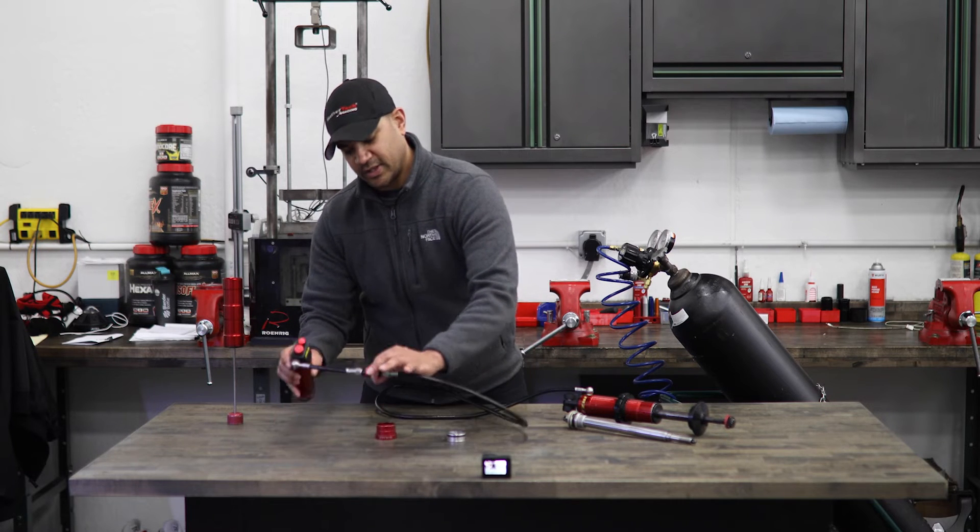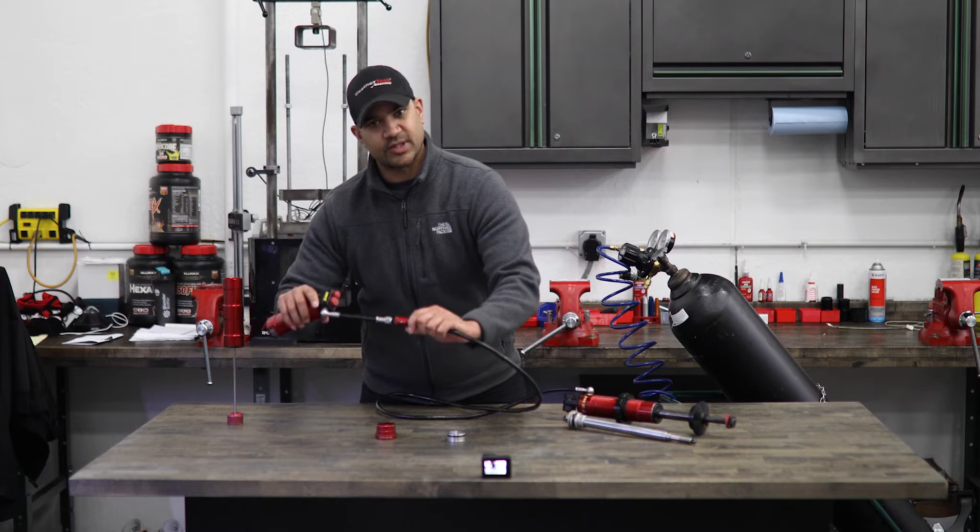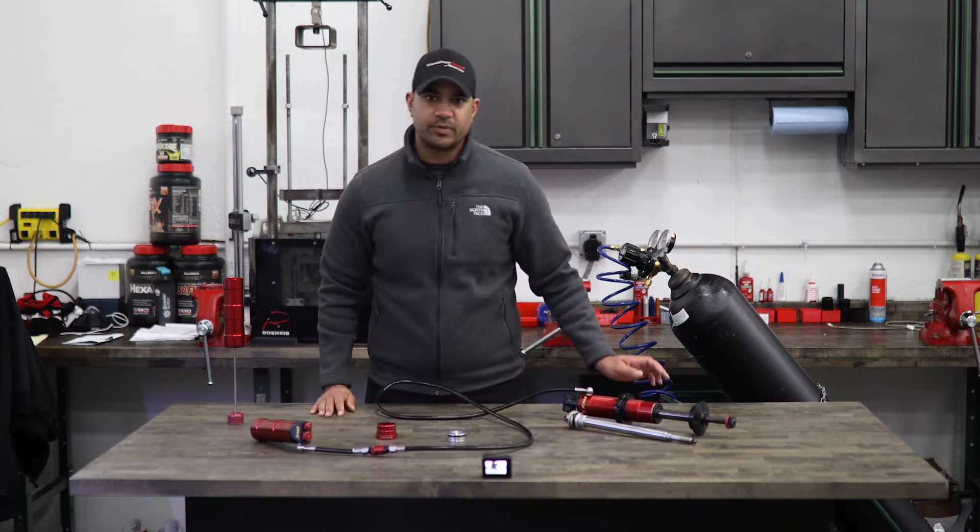What a quick disconnect fitting is, is this little fitting right here on the shock hose that allows us to take the canister off from the damper.